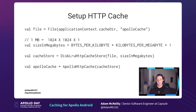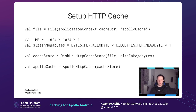Once we have that, we create our DiskLRU HTTP cache store. LRU stands for least recently used, which is a fancy way of saying oldest — that's why when our limit is reached, Apollo removes the oldest entries. We return the Apollo HTTP cache from there, and then on our Apollo client builder, we call the HTTP cache builder method and pass this in.